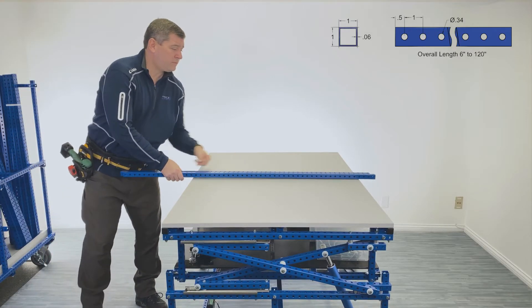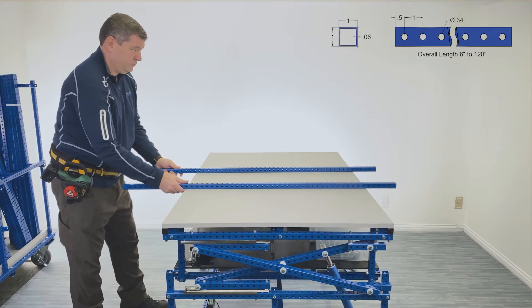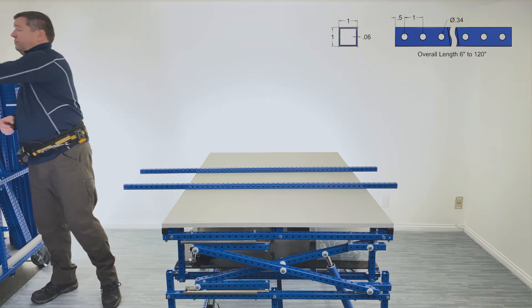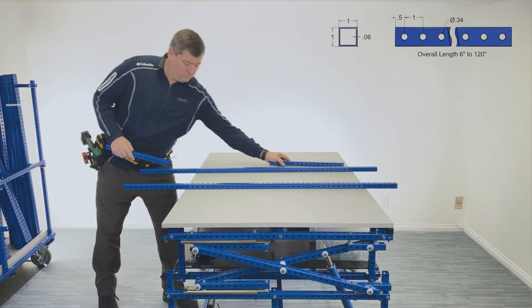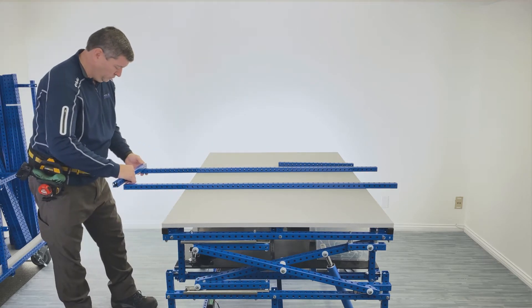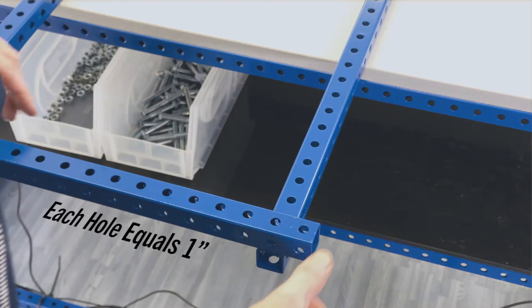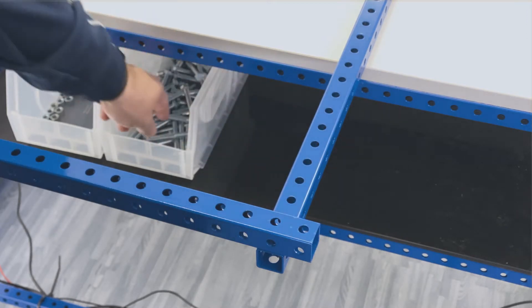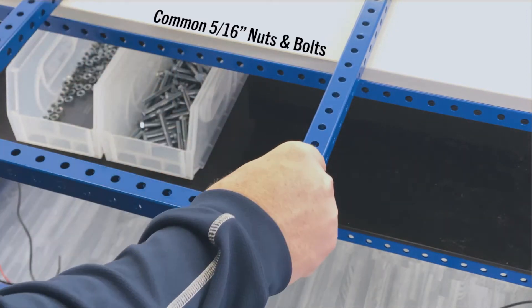We use structural tube that is one inch by one inch square with holes every one inch starting at the half inch mark from the end of the tube. Simply count the holes for placement. Holes are sized to use 5/16 inch nuts and bolts.